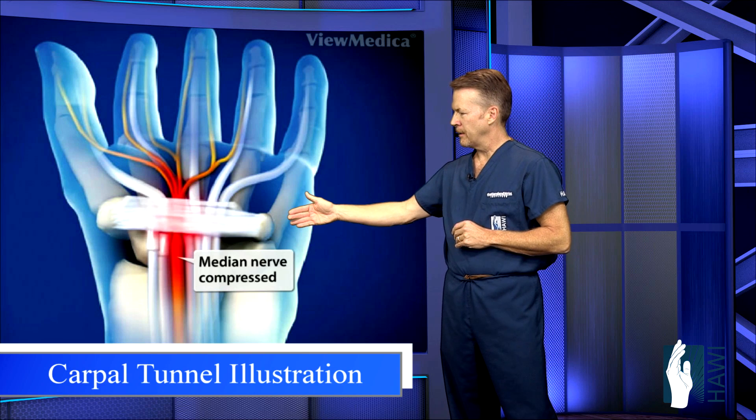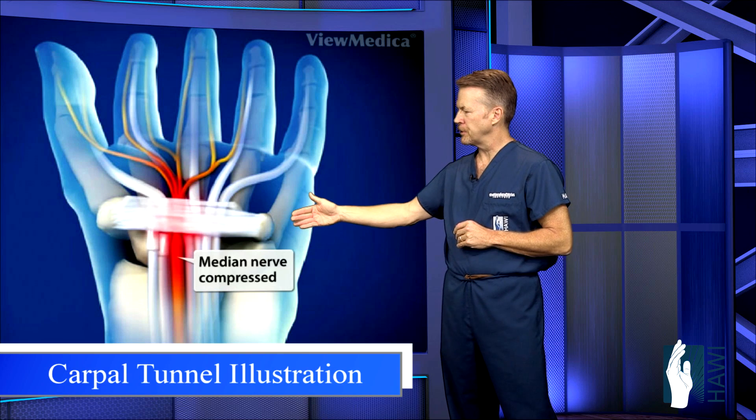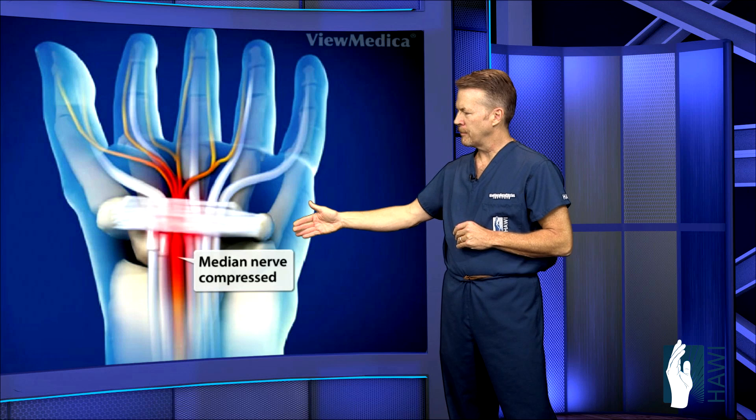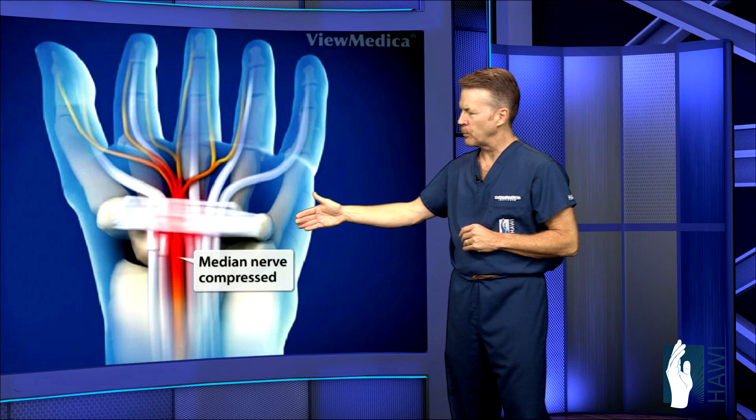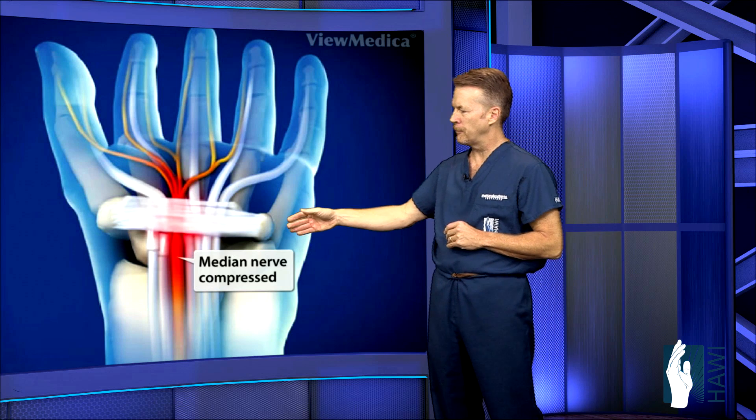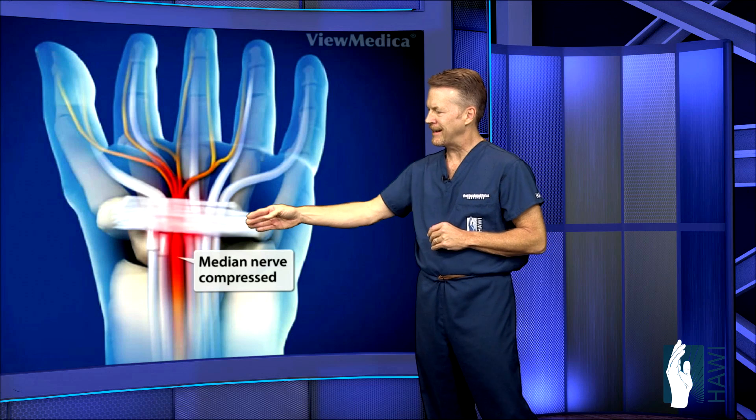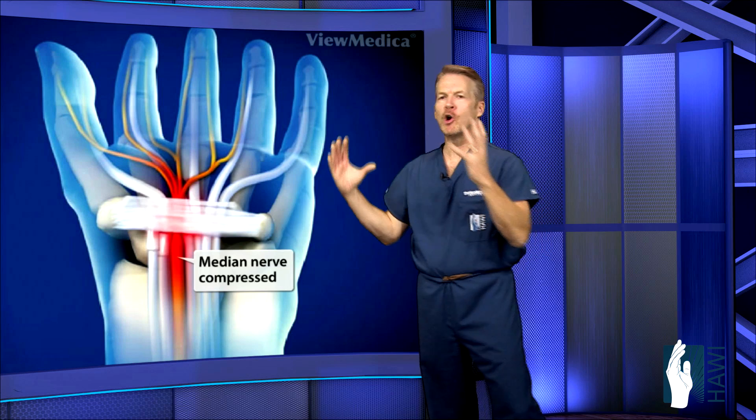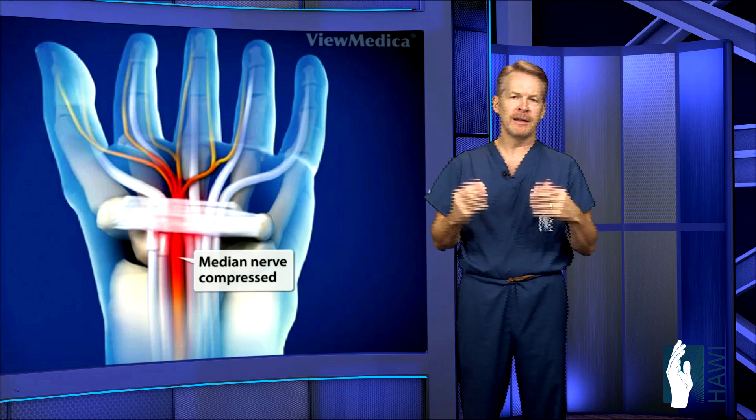You can see here an animated picture of the carpal tunnel. The yellow slash red structure running through the carpal tunnel is the median nerve with all the tendons. But it's this tight ligament that we have to cut to open this up, let the pressure off the nerve and get rid of the symptoms.